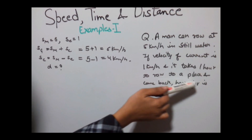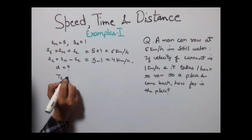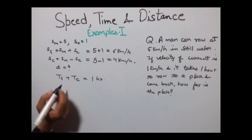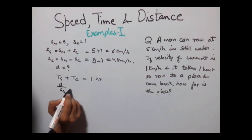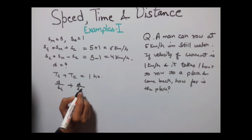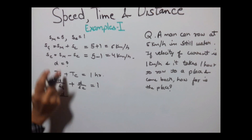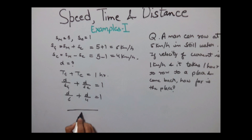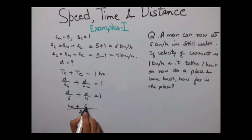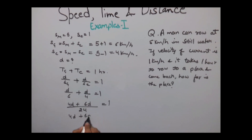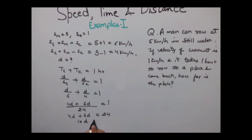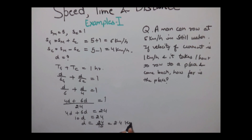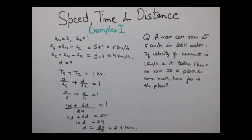It takes 1 hour to row to a place and come back, so time of going plus time of coming equals 1 hour. Time of going = D/6, time of coming = D/4, and D/6 + D/4 = 1. Taking LCM of 24: 4D + 6D = 24, so 10D = 24, giving D = 24/10 = 2.4 km. For more tutorials, tune in with indiaedu.com.